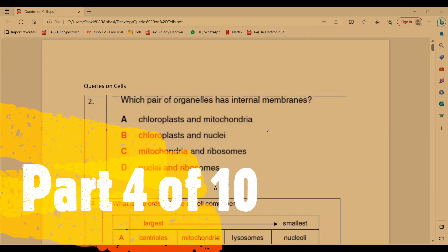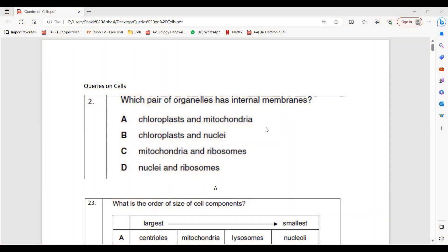Let's have a quick look at questions on the chapter about cells. Which pair of organelles has internal membranes? They're not talking about the membrane which bounds them, but internal membranes. So option A, because chloroplast and mitochondria have inner membrane systems other than the membrane they have.